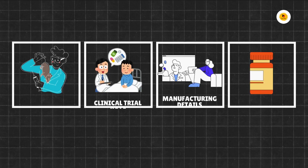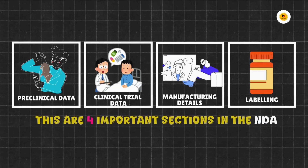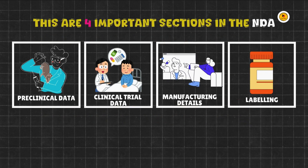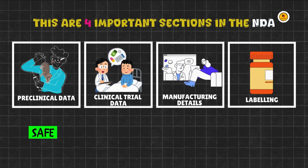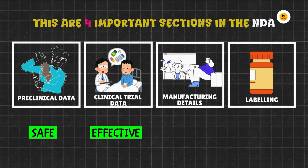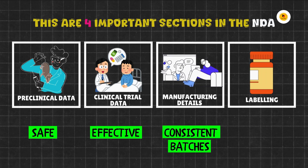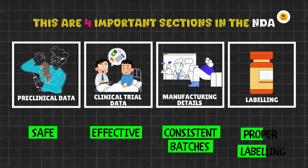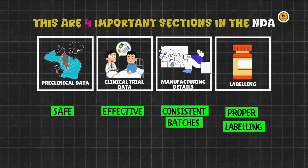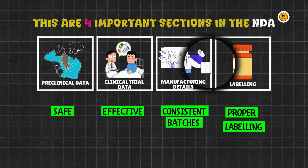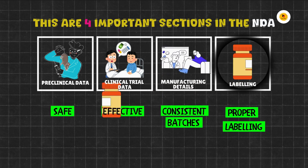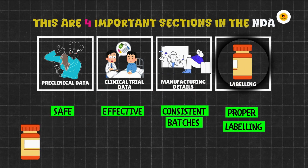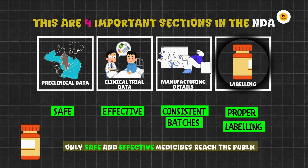So these are the four important sections in the NDA. Each section helps the FDA understand if the drug is safe for patients, effective for treating the intended condition, if the pharma company is able to consistently produce high-quality batches, and if there is proper labeling. The FDA carefully reviews all this information before deciding if the drug can be approved and sold. This process ensures that only safe and effective medicines reach the public.